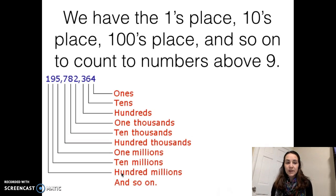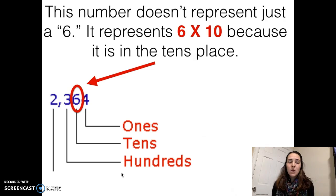Now, when we want to represent a number that's larger than 0 or 9, we can have different places, like the 1's place, the 10's place, and the 100's place, and that allows us to represent larger numbers. For example, if we're looking at this number 2,364, the 6 in this number does not just represent the value 6, but rather it represents the value 60, which is 6 times 10, because it's in the 10's place.